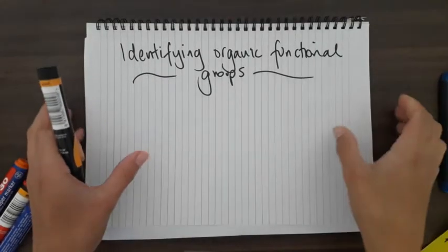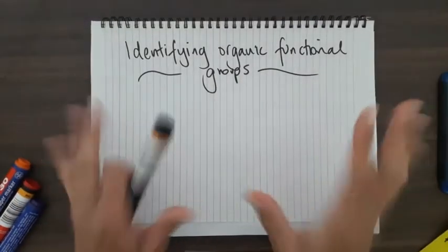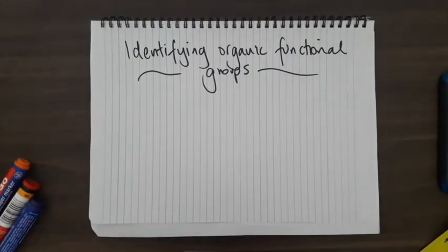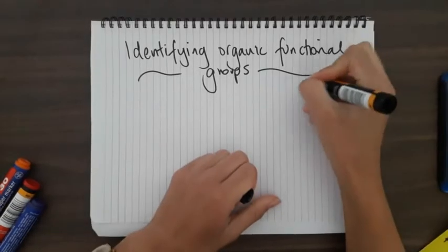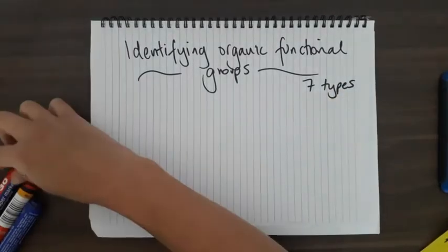All right, so hello. Welcome to a bit of level two organic chemistry. Just a really quick video to help you get familiar with identifying organic functional groups. You will have seven different types in NCEA level two.